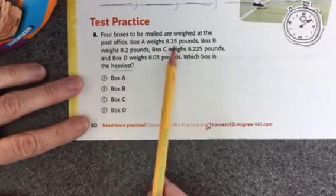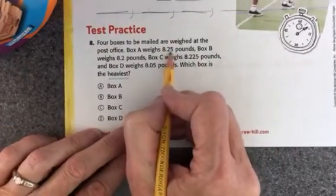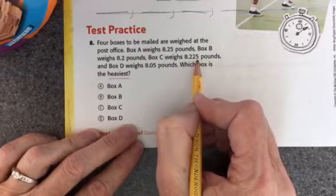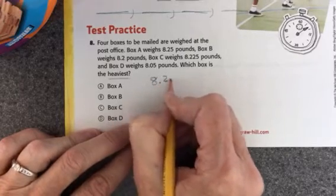Okay, what I'm noticing here is that all of these weights, like this one goes to hundredths, this one goes to tenths, and this one goes to thousandths. So it would be really smart to write them in a column.